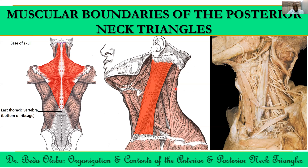The superior fibers of trapezius insert onto the lateral aspect of the clavicle — the lateral third of the clavicle. Then we have sternocleidomastoid, which arises from the sternum and the medial one-third of the clavicle and inserts onto the mastoid process as well as the superior nuchal line. This muscle is also innervated by the spinal accessory nerve. When both sides contract, they flex the neck; when only one contracts, it turns the neck to the contralateral side in rotation. We use the posterior border of sternocleidomastoid, anterior border of trapezius superior fibers, and middle third of the clavicle to define the posterior triangle.